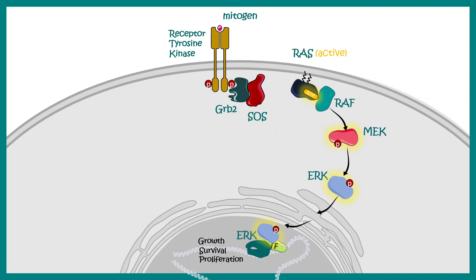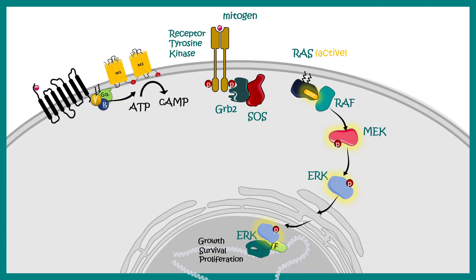When we think about the RAS MAP kinase pathway, we always visualize the receptor tyrosine kinase as the initiator. But this pathway can also be initiated by G-protein coupled receptors, which brings us to the concept of crosstalk between signaling pathways. Certain proteins known as beta-arrestin can modulate the GPCR pathway — they bind to GPCRs and recruit a kinase known as SRC kinase.